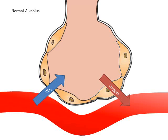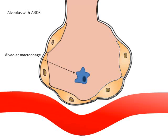In a normal alveolus, gas exchange occurs uninhibited, but in an alveolus with ARDS, alveolar macrophages release inflammatory cytokines, including interleukins and tumour necrosis factor.